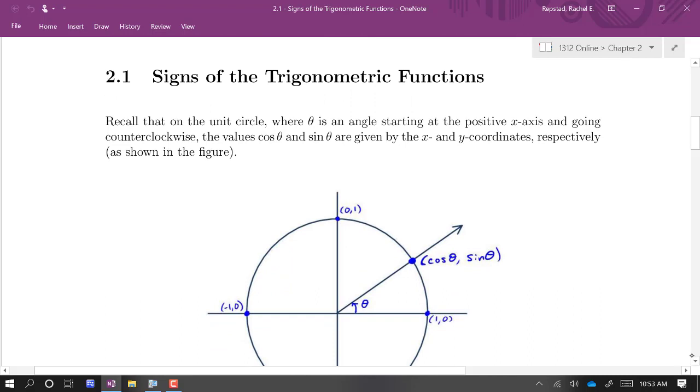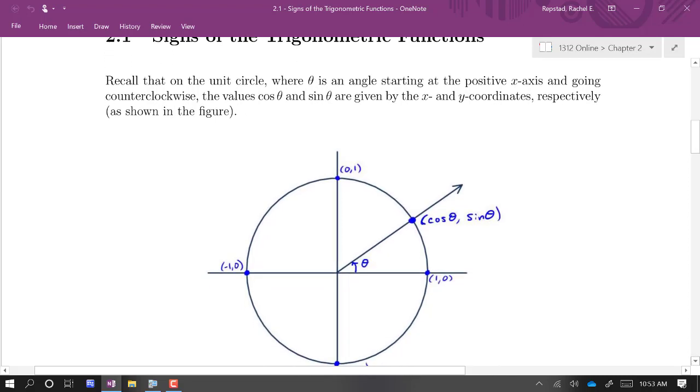You might recall from the first semester that we learned for a given angle theta, if we draw this angle out from the origin to where it intersects the unit circle, the unit circle being a circle of radius one centered at the origin, the spot where it intersects the circle, those coordinates are defined to be cosine of theta and sine of theta. For example, at 90 degrees, cosine of 90 degrees equals zero and sine of 90 degrees equals one.